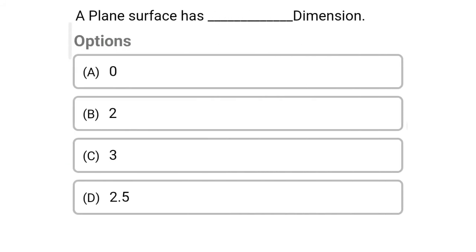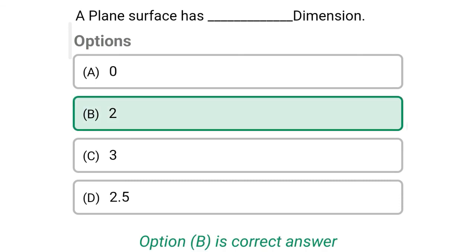Next question: a plane surface has how many dimensions? Option A: 0. Option B: 2. Option C: 3. Option D: 2.5. The correct answer is Option B — 2.